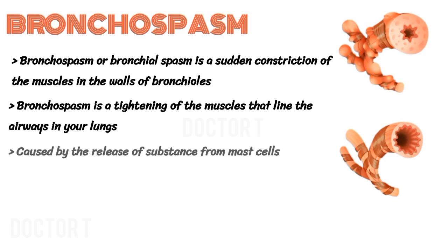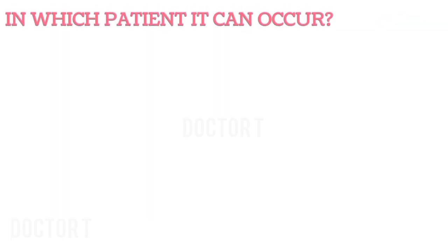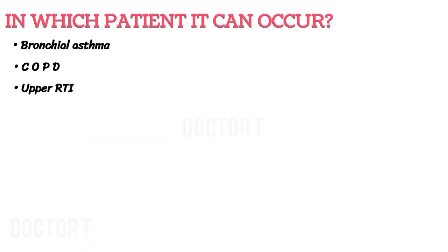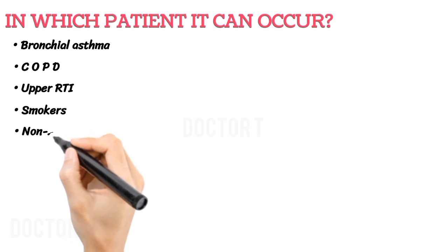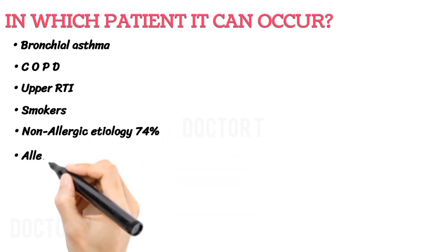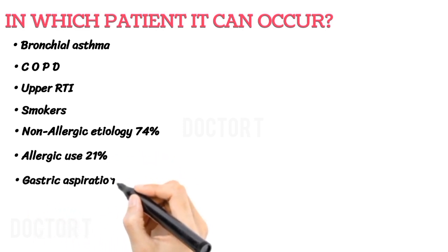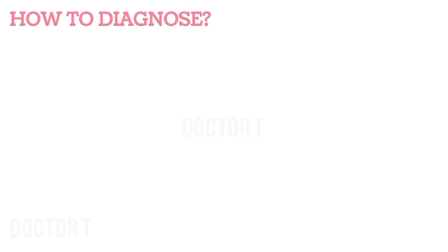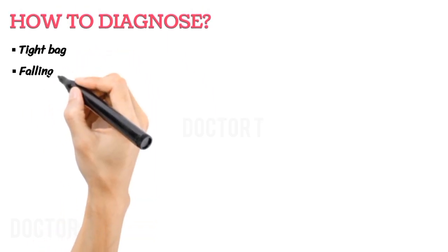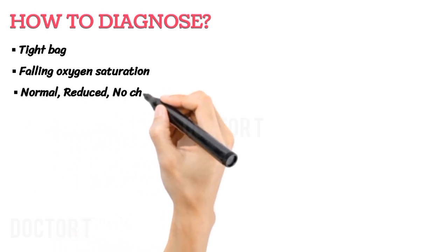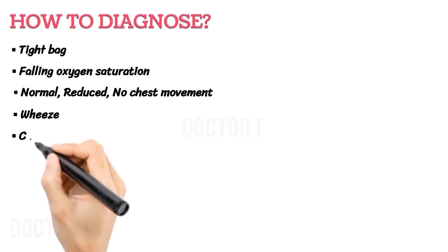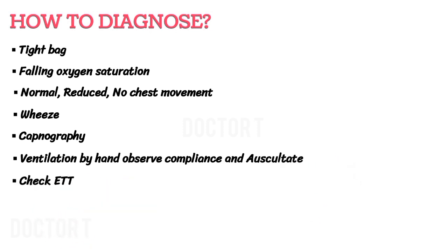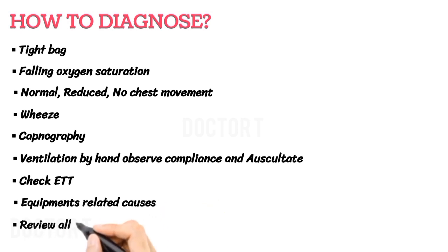Bronchospasm is caused by the release of substances from mast cells. It can occur in patients with bronchial asthma, chronic obstructive pulmonary disease, upper respiratory tract infection, and smokers. Non-allergic etiology accounts for 74% and allergic causes 21%. Other causes include gastric aspiration, premature attempt, and anaphylaxis. How to diagnose: tight bag, falling oxygen saturation, normal or reduced or no chest movement, wheeze, capnography, ventilation by hand — observe compliance and auscultate, check ETT, equipment-related causes, and review all monitors.